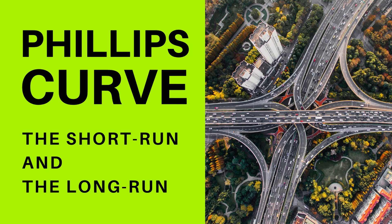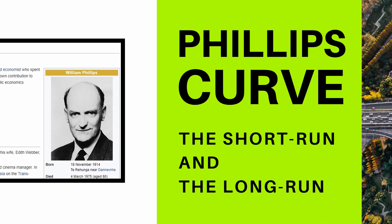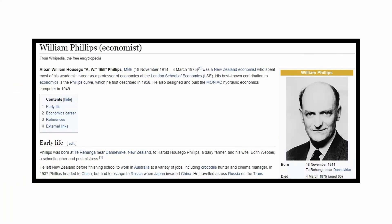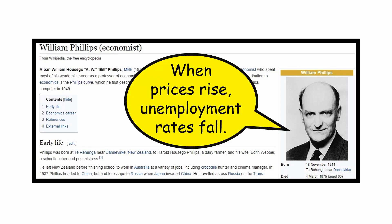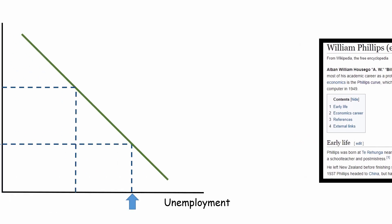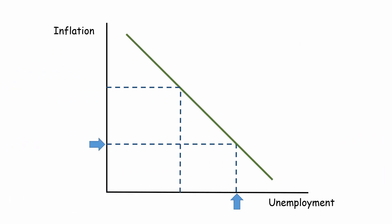The Phillips Curve describes the relationship between inflation and unemployment. The theory claims economic growth causes an increase in inflation, which in turn should lead to more jobs and less unemployment. So as inflation increases, unemployment decreases.